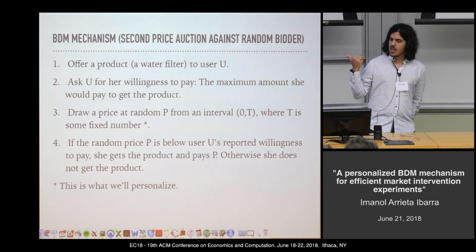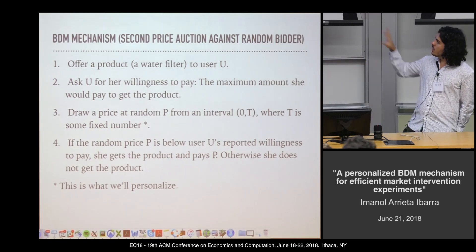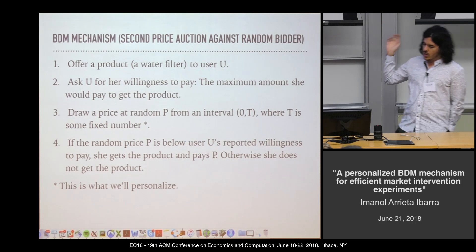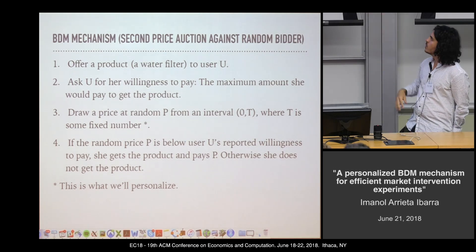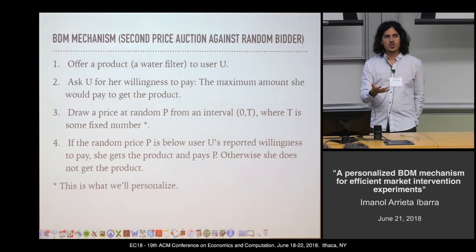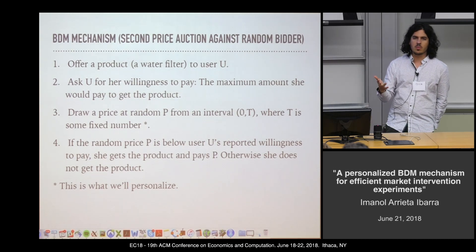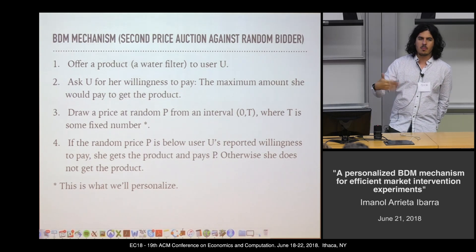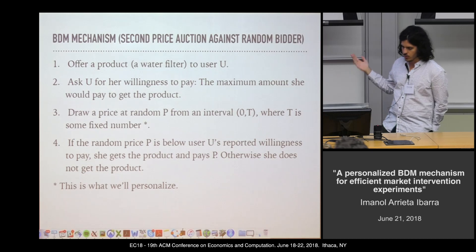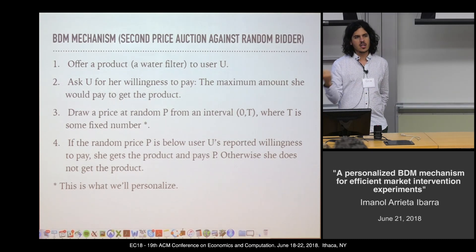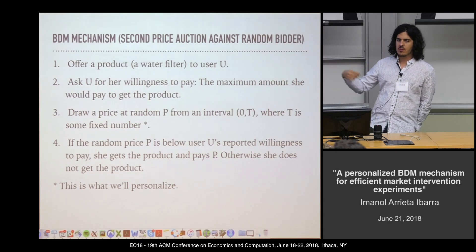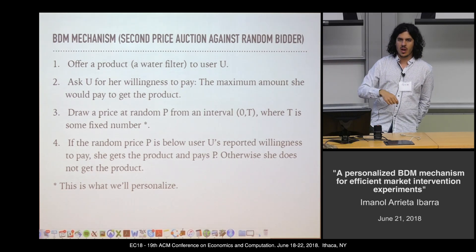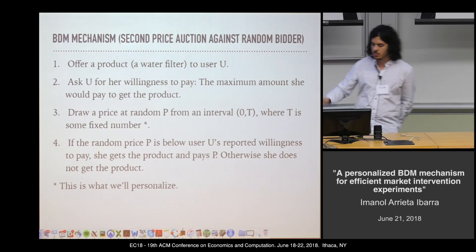So what is the BDM mechanism? We go to the field and we offer a product — in this case a water filter — to a user, and we ask the user for their willingness to pay: the maximum amount they would be willing to pay for the product or service. Then we draw a price at random from a distribution. If the price is below the user's willingness to pay, we give the product and charge the second price. So this is a second price auction against a random bidder.